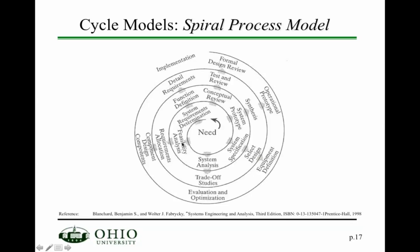In the spiral model, you start with a feasibility analysis, then allocate requirements, design components, analyze the system, perform trade studies and evaluation optimizations. There is an increased level of detail as you move from the inside of the spiral to the outside.